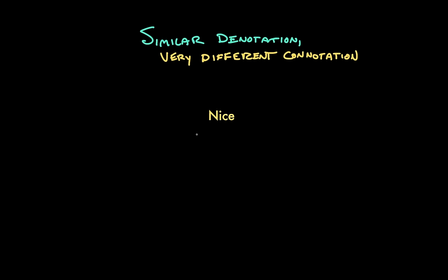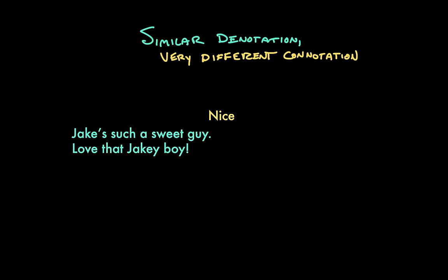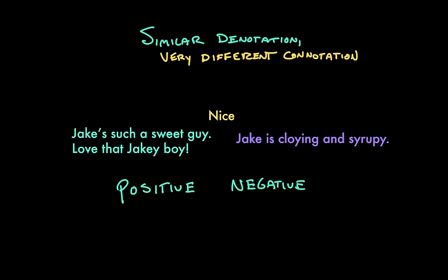If I trust the person, I could describe them as sweet as sugar — oh, Jake's such a sweet guy, love that Jakey boy. But if I didn't trust that person, like if I thought that this hypothetical Jake's show of kindness was fake, I could say that he was cloying or syrupy. And those words also mean sweet, but they have a connotation of too much. Cloying means too sweet. So you can sort these words into positive and negative connotations — sweet is positive, cloying is negative.